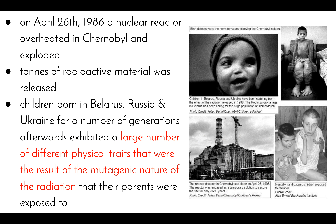On April 26th, 1986, a nuclear reactor in Chernobyl overheated and exploded. As a result, tons of radioactive material was released into the atmosphere. As we can see from the images here, children born in Belarus, Russia, and the Ukraine for a number of generations afterwards exhibited a large number of different physical traits as a result of the mutagenic nature of the radiation their parents were exposed to. The mutations occurred in the gametes of those individuals, so they were passed on to offspring because there was a change in the DNA in the sperm and egg of those exposed to the radiation from the accident.